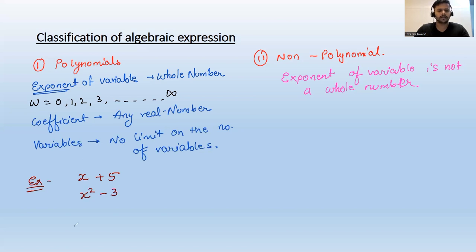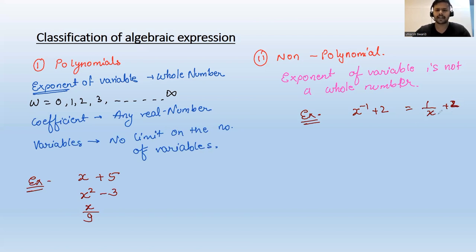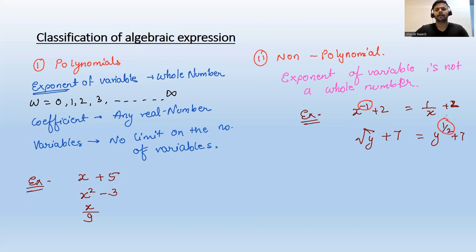Examples of polynomials: x plus 5, x squared minus 3, and x by 9. For non-polynomials: x to the power minus 1 plus 2, which is the same as 1 by x plus 2 — whenever we see a variable in the denominator, it is not a polynomial. Another example is root of y plus 7, which is y to the power 1 by 2 plus 7. The exponents are minus 1 and 1 by 2 — neither is a whole number, so these are non-polynomials.